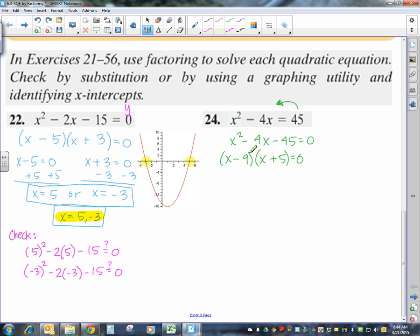Then my next step is to set each factor equal to 0. So x minus 9 equals 0, x plus 5 equals 0. Add 9. So this is that step of solving. x equals negative 9. And here I'm going to subtract, and x equals negative 5. So you can just put the or in between and box it.